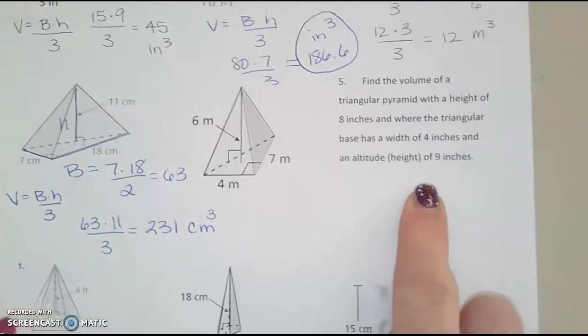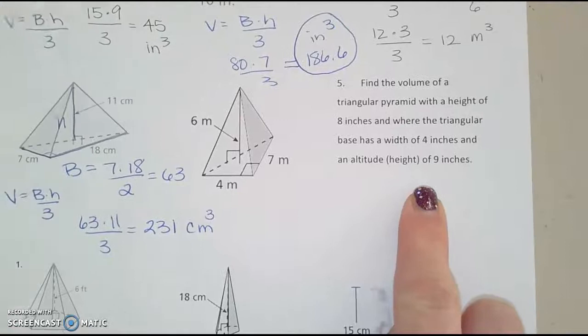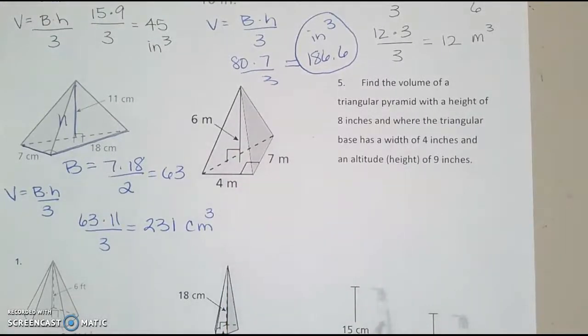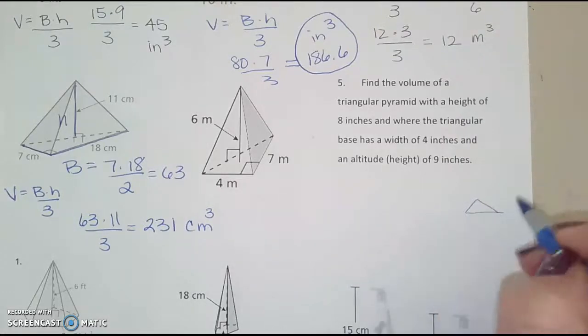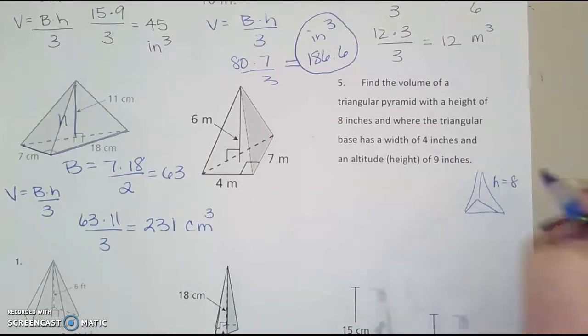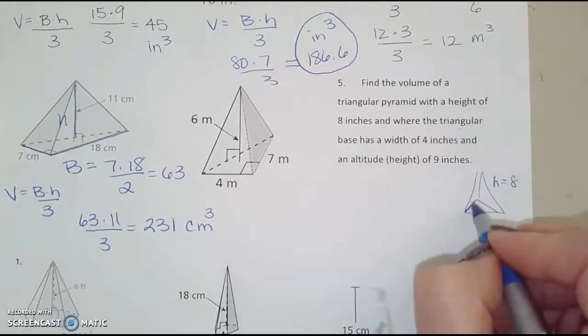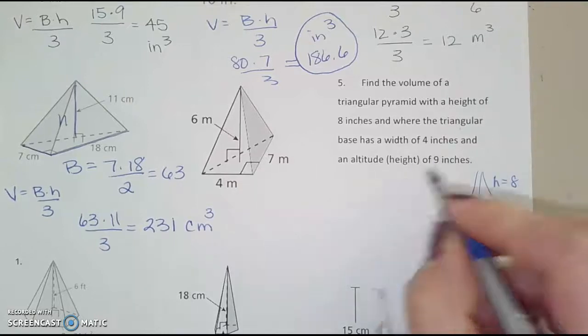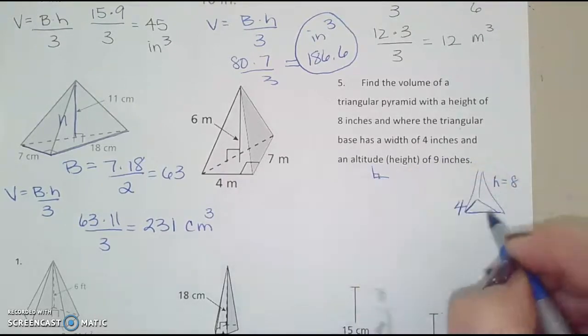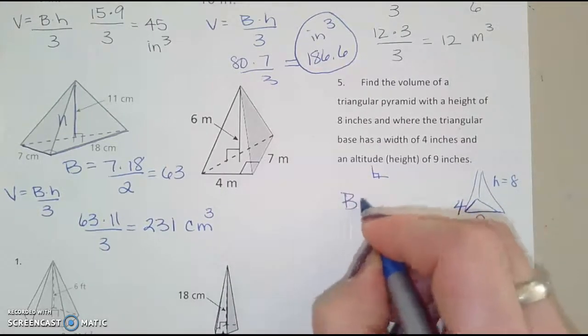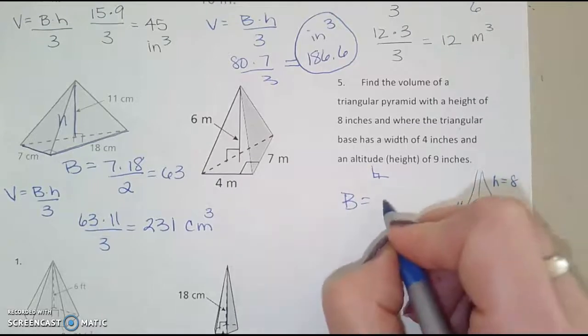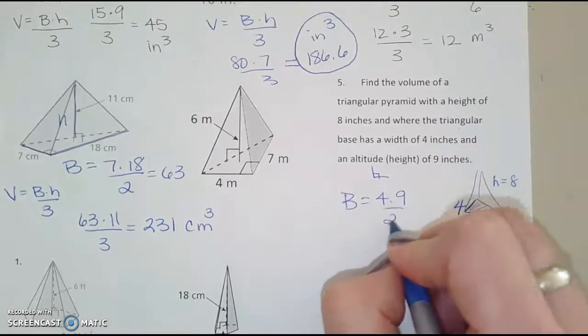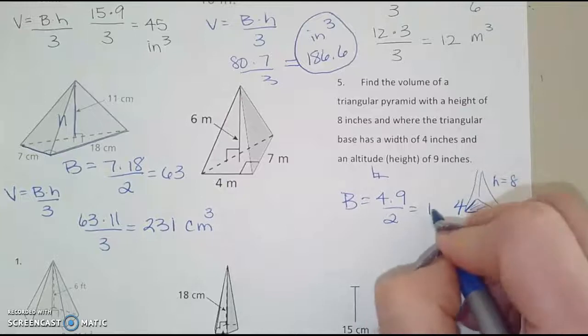Again, I'm going to do the word problem over here. So I'm going to switch over a little bit, and then you'll pause and do this one for practice. So let's find the volume of a triangular pyramid with a height of 8 inches. So I know I have a triangle for a base, and then it goes up to a height of 8 inches. And the triangular base has a width of 4 and an altitude or a height. An altitude is always going to be perpendicular to the base of 9. So I know for my capital B, my area of this triangular base, I'm going to be doing 4 times 9 divided by 2, which is 18.